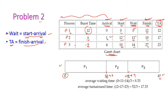Now let us compute the turnaround time. The formula is finish time minus arrival time. For P1: finish time 12 minus arrival time 0 equals 12. For P2: finish time 18 minus arrival time 1 equals 17. For P3: finish time 27 minus arrival time 4 equals 23. The average waiting time is 0 plus 11 plus 14 divided by 3, which equals 8.33. The average turnaround time is 12 plus 17 plus 23 divided by 3, which equals 17.33.